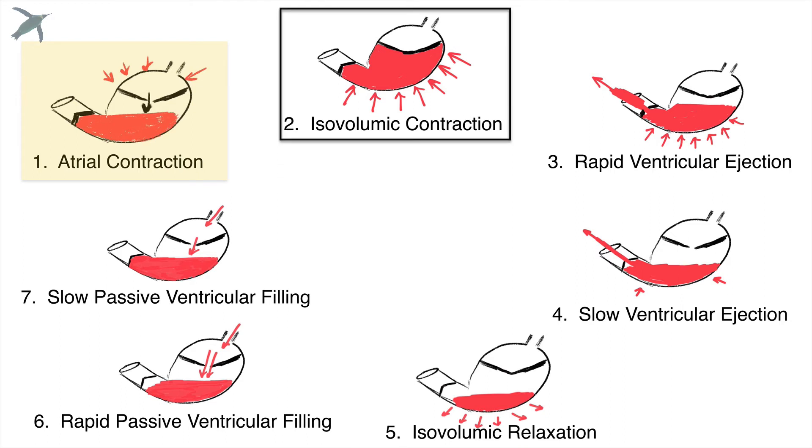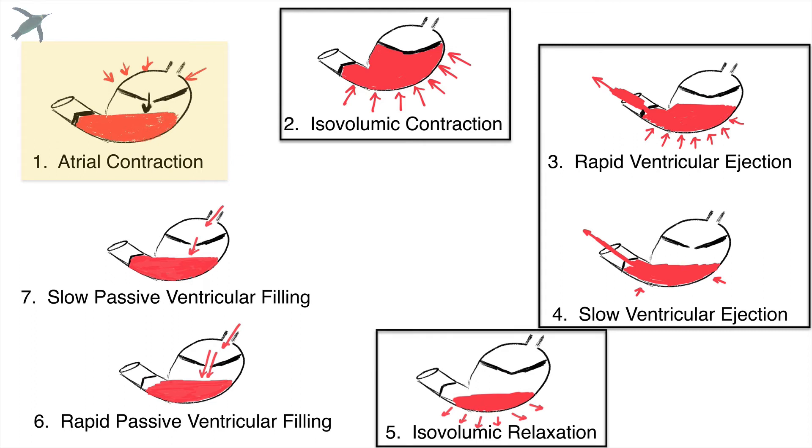We've got isovolumic contraction already. This ventricular ejection actually occurs in two phases, what we call rapid and slow. Isovolumic relaxation, you guys already know. And then we have the ventricular filling, which occurs both rapidly and slowly. It's not that bad.